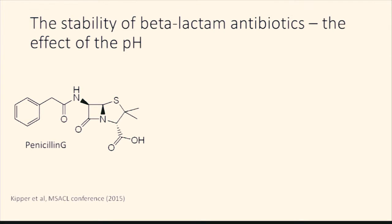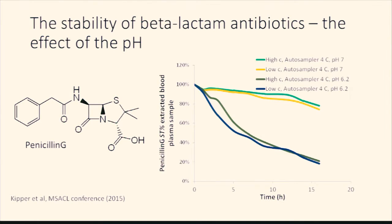Secondly, the well-known antibiotic penicillin G was evaluated and the effect of pH was studied. In two very close pHs, 6.2 and 7, over a 16-hour time period, penicillin samples acted almost completely differently. When the pH was 6.2, rapid degradation occurred after 16 hours, leaving only 20% of penicillin in the samples. When the pH was increased to 7, the stability was improved and approximately 80% of penicillin remained after the 16-hour time period.